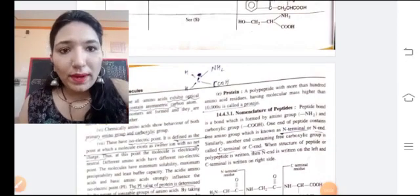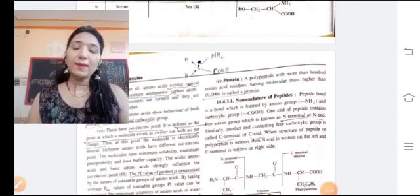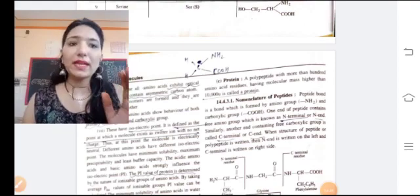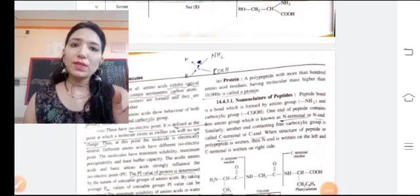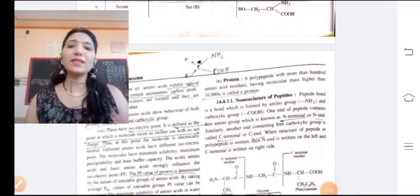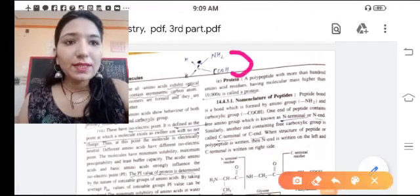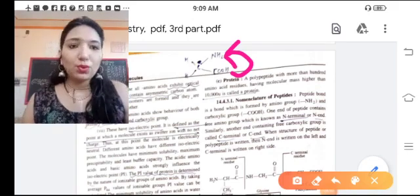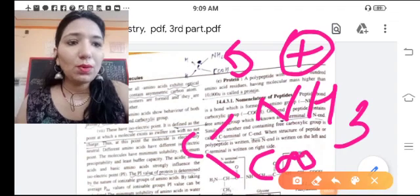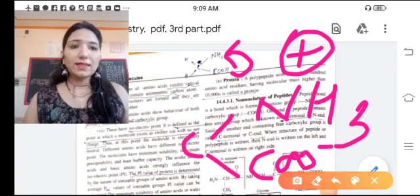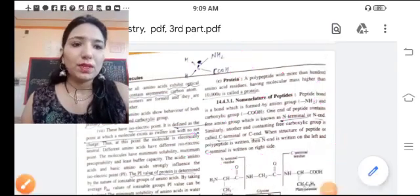These have isoelectric point. Isoelectric point is defined as the point at which a molecule exists with no net charge. We have NH2 and COOH which is negative charge and NH2 which is positive charge. NH3 plus and COO minus, so this is zwitterion.